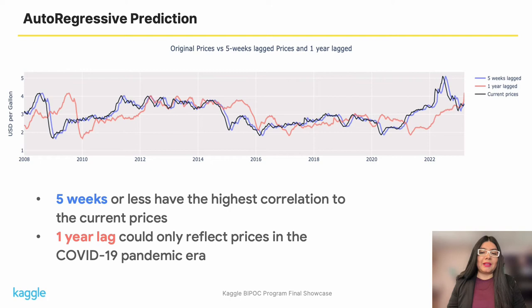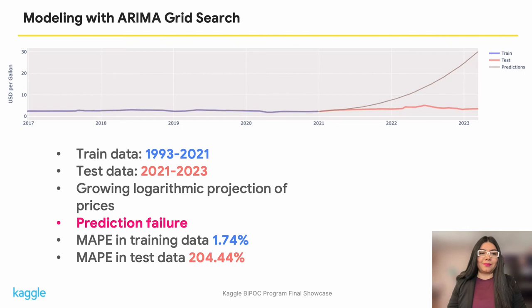A basic forecasting practice is lagging time steps from the original time series. In this comparison, we found that five weeks or less prior to the current data can capture most of the fluctuations in gasoline prices. In contrast, a one-year lag still reflects prices from the time of COVID-19.